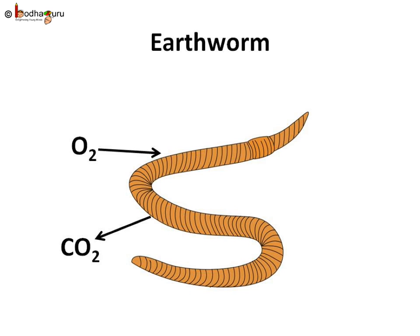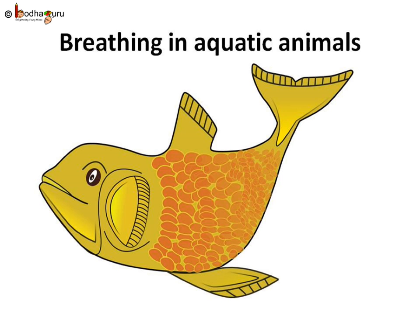It is just like how frogs breathe in the water. Now, how do water animals breathe? Do all water animals breathe through skin like frog? No. A fish breathes through gills. Gills are full of blood vessels. The fish takes in water through the mouth and that water washes the gills. The blood in the blood vessels then absorbs the dissolved oxygen from the water.